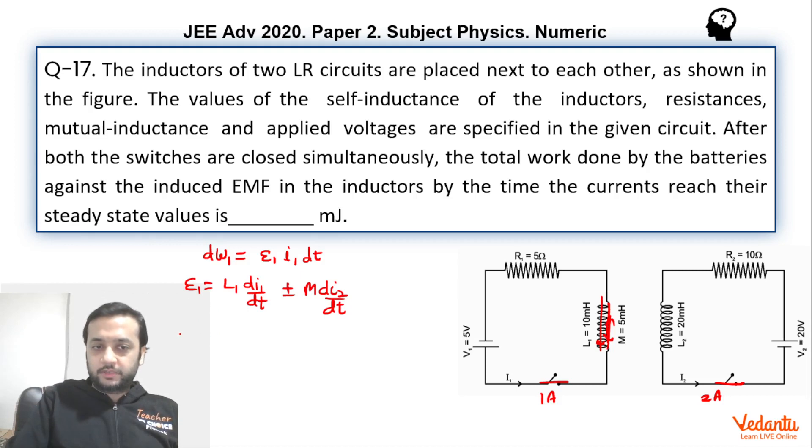If you see what is dW1, if you put this value, dt will come over here. So this will become L1·dI1·I1 plus minus M·I1·dI2. Symmetrically speaking, we can write dW2 as L2·dI2·I2 plus minus M·I2·dI1.